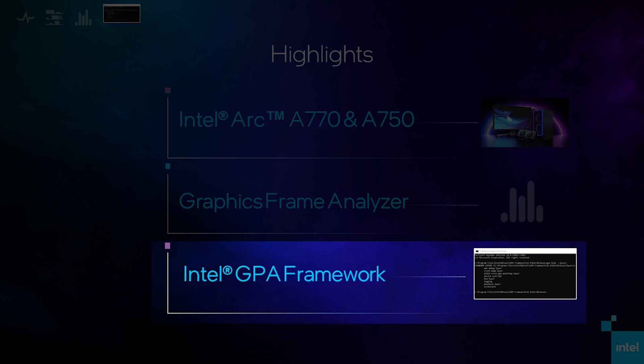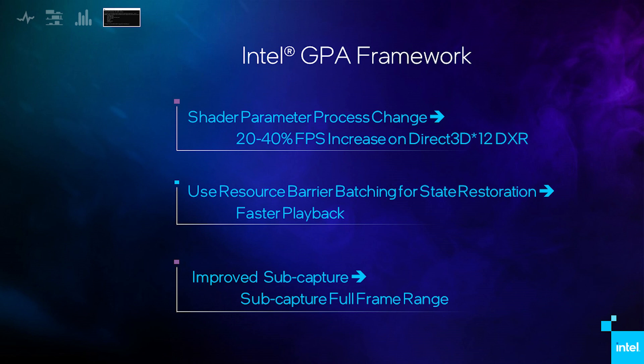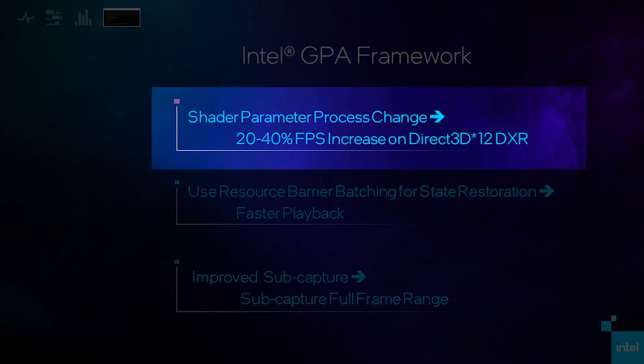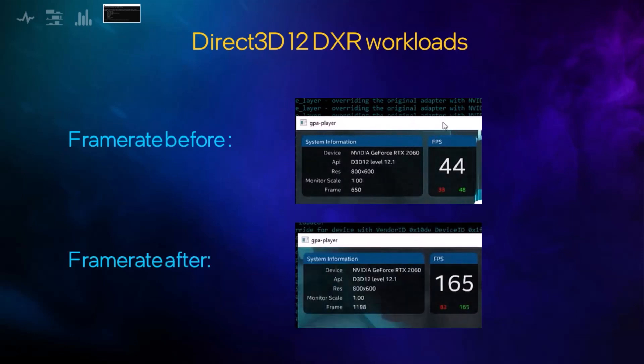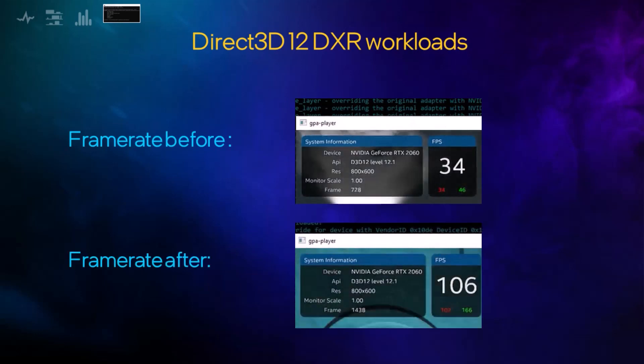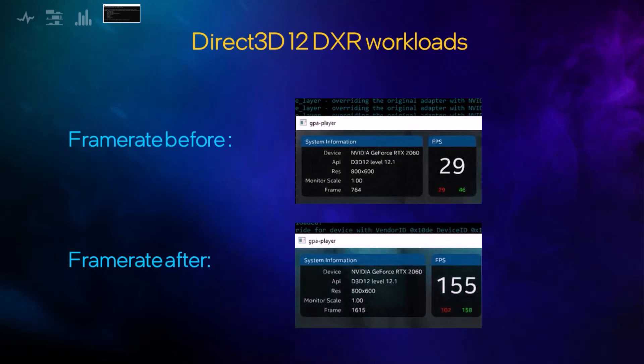And finally, we have continued making improvements to Intel GPA Framework, our command line interface tool that helps you automate your process. With GPA Framework, we modified the way we process shader parameters for dispatch-raised calls, reducing performance overhead for Direct 3D12 DXR workloads. This improvement has resulted in a 20 to 40 percent frame rate increase on GPA playback of captured streams from DXR-enabled games.